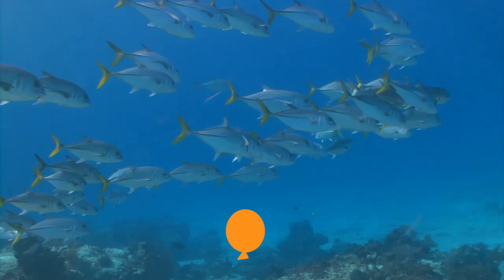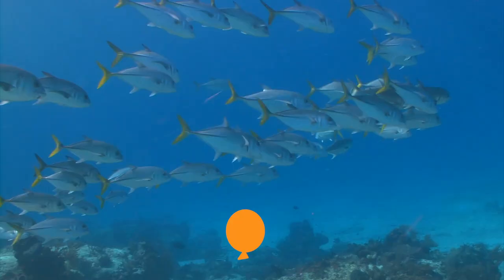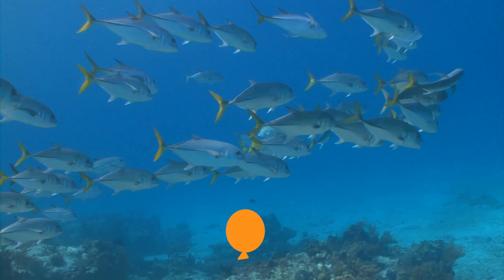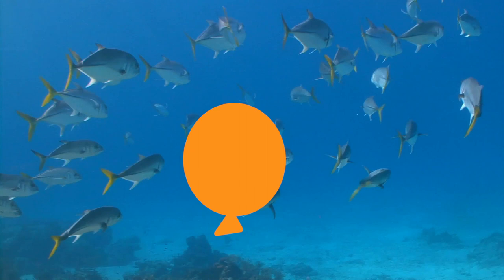Imagine you went down to 10 meters and took a deep breath of compressed air. Then you went swimming up to the surface. Picture that balloon that we filled at 10 meters. If you took that balloon to the surface, it would double in size. Your lungs can't double in size and so they would pop like a balloon. Don't hold your breath.